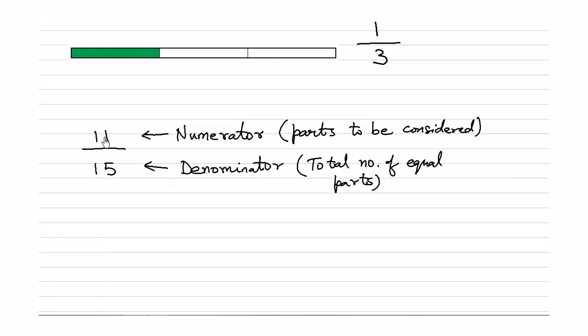So in a fraction we see that 11 over 15 is written as 11 upon 15, and this 11 is said to be the numerator, means the number of parts which are to be considered, and 15 is the denominator or the total number of equal parts that we had divided the chocolate or the ribbon into.